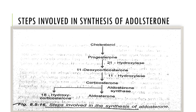When corticosterone converts into aldosterone, there is a byproduct which is 18-hydroxycorticosterone. This 18-hydroxycorticosterone is another mineralocorticoid and is basically a byproduct when corticosterone converts into aldosterone.